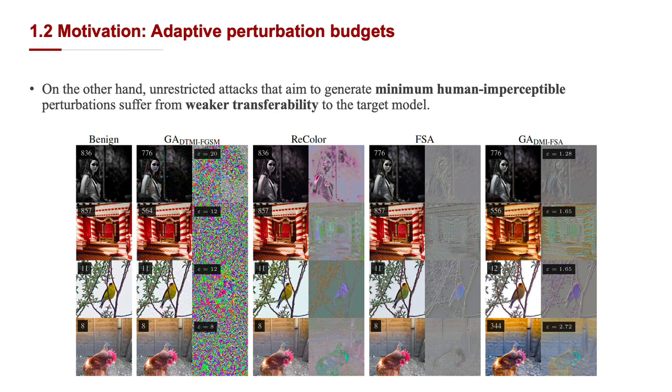Although the transfer-based L-infinity norm attack GA-DTMI is able to fool the defense testing model to a certain extent, the generated perturbations can be human perceptible. Besides, the other two unrestricted attacks suffer from weaker transferability when compared to our method. The last three adversarial examples preserve their prediction after the attack, such as the recolor and the features-based attack.